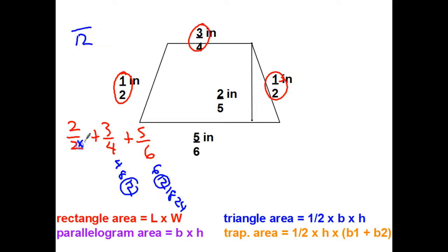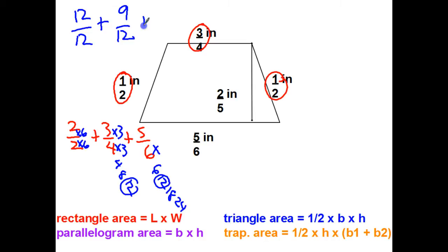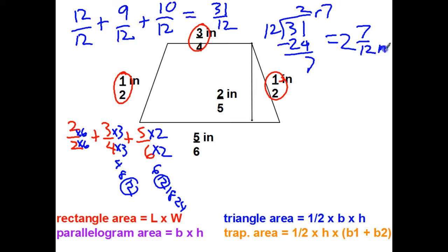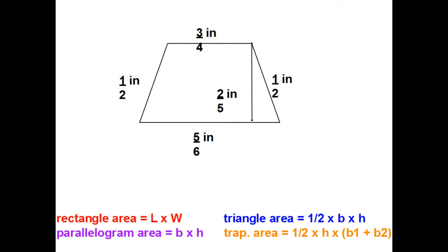To get the two to be a twelve I multiply bottom times 6, so top times 6 as well — giving twelve-twelfths. To get four to have a twelve on the bottom, I multiply by 3 — so the top also times 3, giving nine-twelfths. To get six to a twelve, I multiply by 2 — so five times 2 equals ten-twelfths. Adding them: twelve-twelfths plus nine-twelfths plus ten-twelfths. Twelve plus nine is 21, plus 10 is 31 — thirty-one twelfths. Dividing: 12 goes in twice with a remainder of 7 — two and seven-twelfths inches.